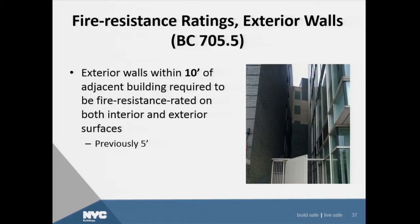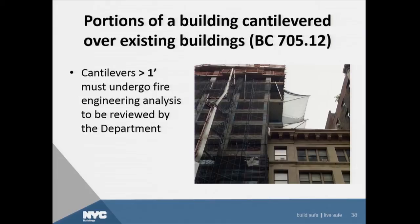Buildings now within ten feet of adjacent buildings are required to be fire resistance rated on both the interior and exterior surfaces. If in excess of ten feet, it's just the interior surface. The previous requirement in the 2008 code was five feet. This is BC Section 705.5. Portions of buildings cantilevered over adjacent buildings: if the horizontal cantilever exceeds one foot, an engineering analysis must be undergone and submitted to the department for review. This is the requirement for Section 705.12 — new.